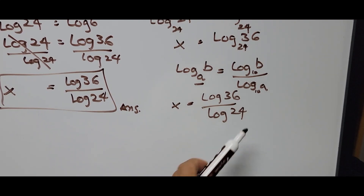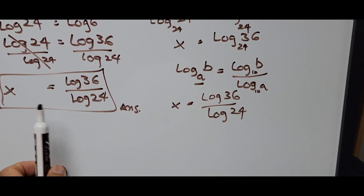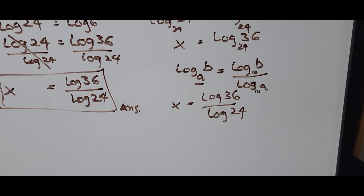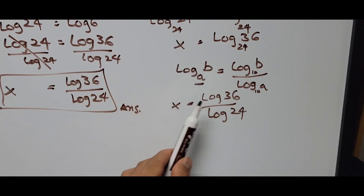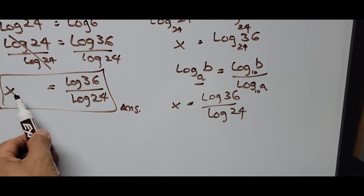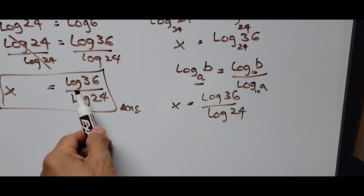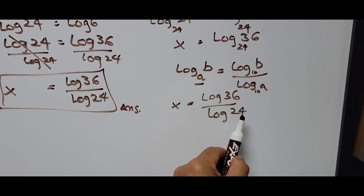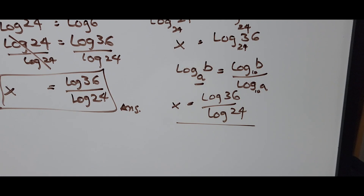Both methods arrived at the same answer: x equals log of 36 divided by log of 24. That's the exact answer.